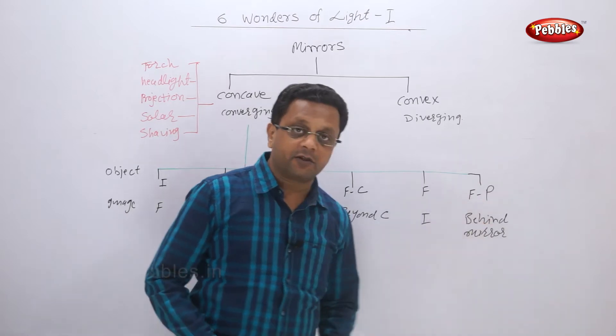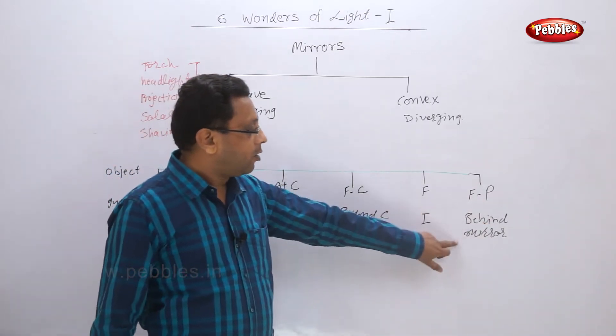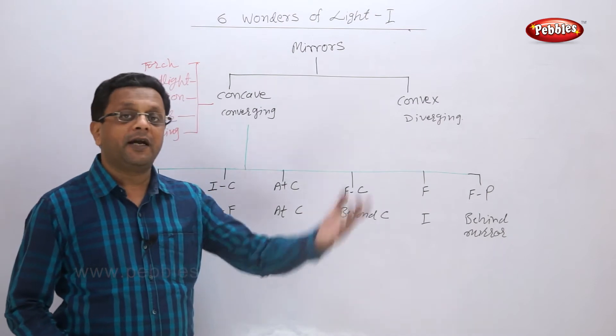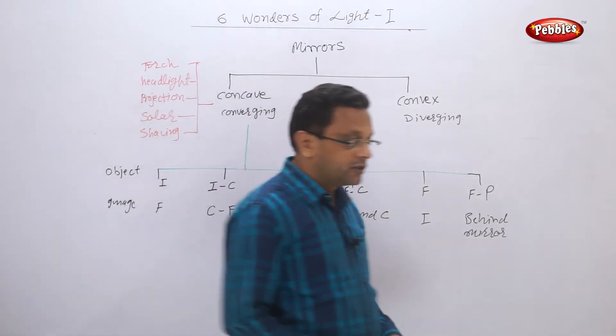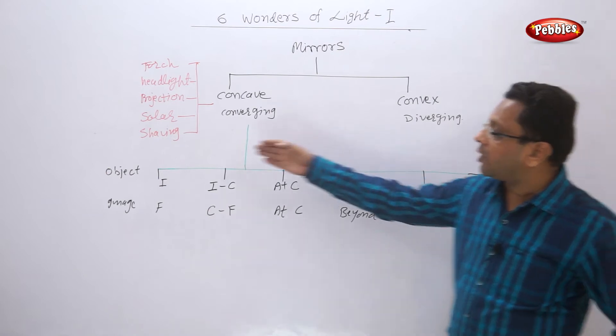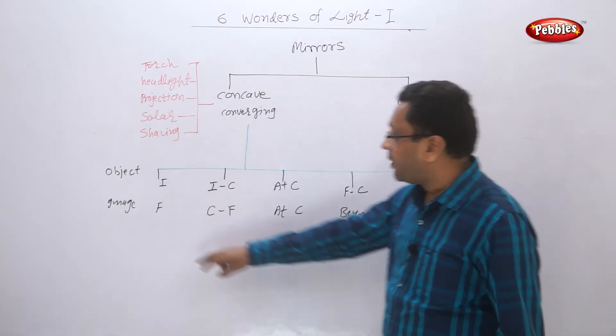When the object was placed between F and P, that is the pole of the mirror, then the image was behind the mirror. So this is in short what we saw, and then we saw what are the applications.